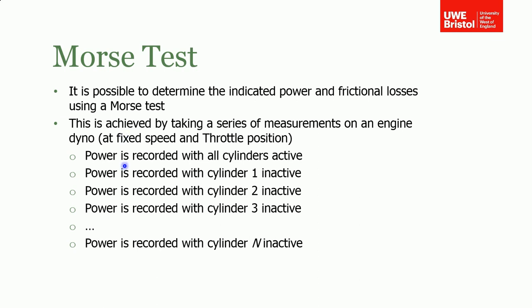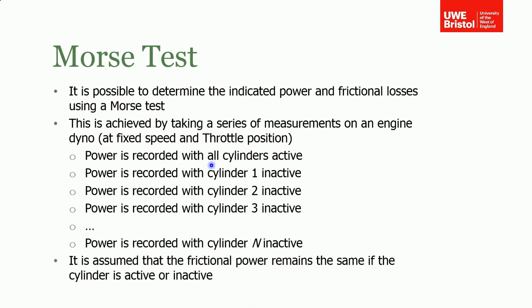It looks fairly involved but it's quite simple in its conception. Basically what it does is it involves just taking a number of quite simple measurements on an engine. For a fixed speed and throttle position—and that's important—the power is recorded with all the cylinders active, so you get a baseline power for the engine. Then one cylinder is deactivated or made inactive, and the power is then recorded for the engine with one cylinder inactive. That's repeated with cylinder two inactive, cylinder three, and so on for as many cylinders in the engine. Once you've got all that information, then we can use that information to determine the indicator power for the engine and consequently the frictional losses in the engine as well.